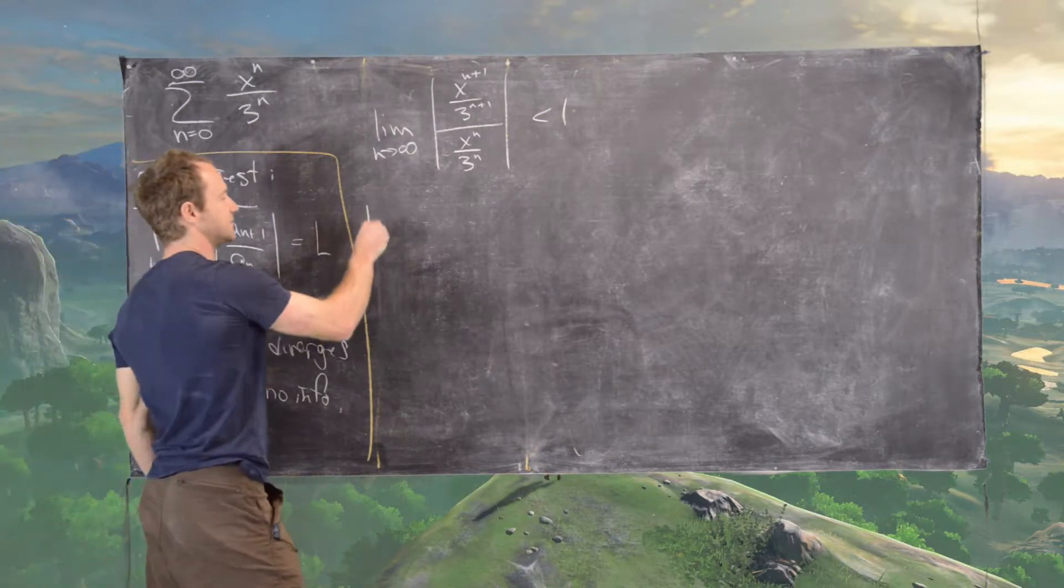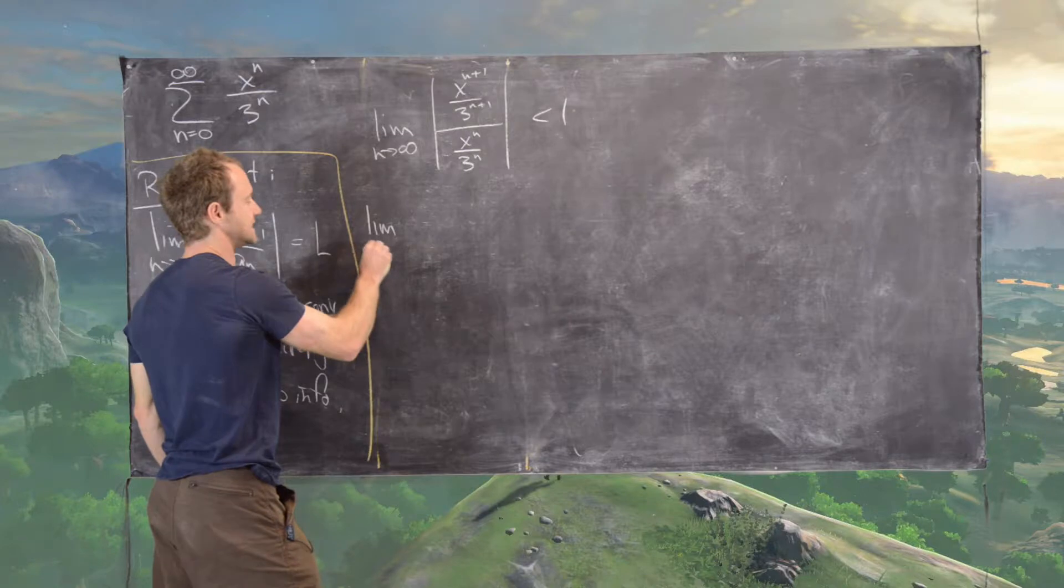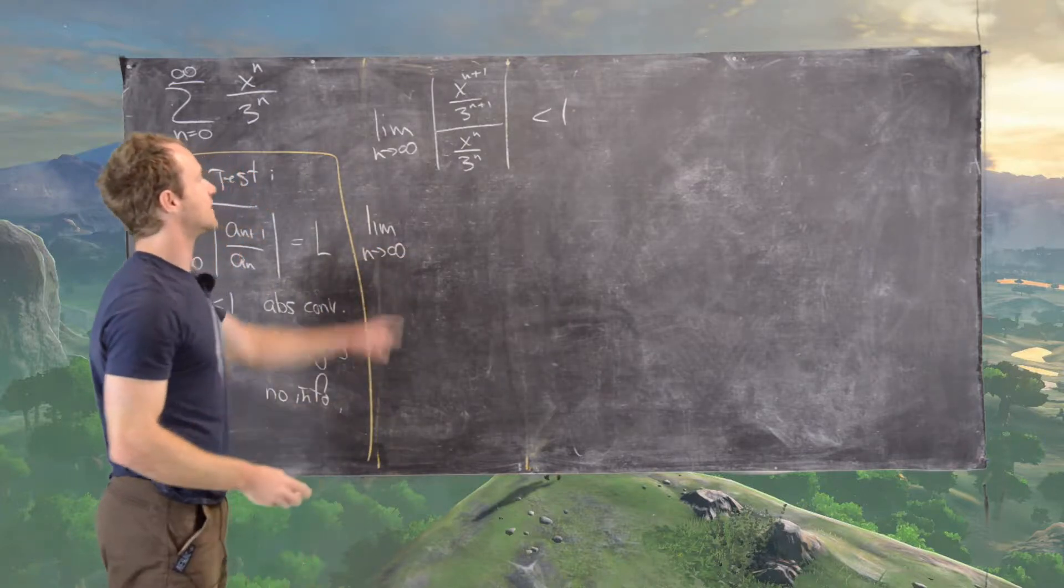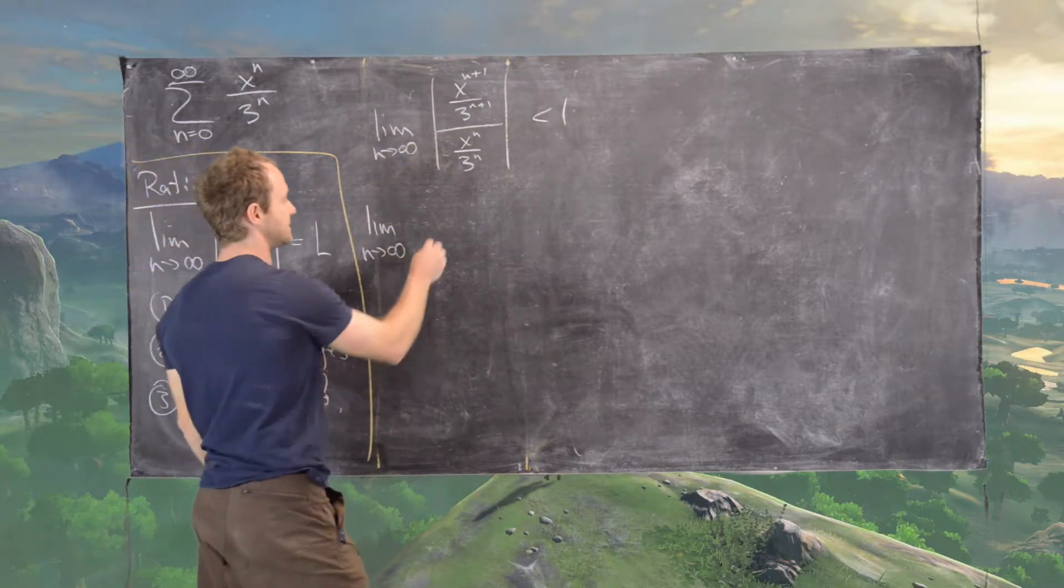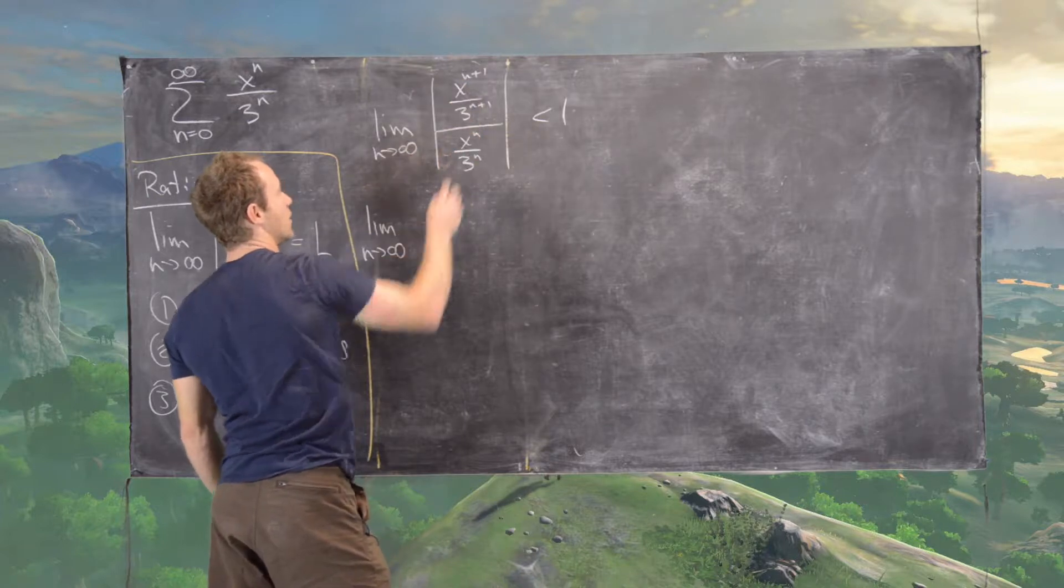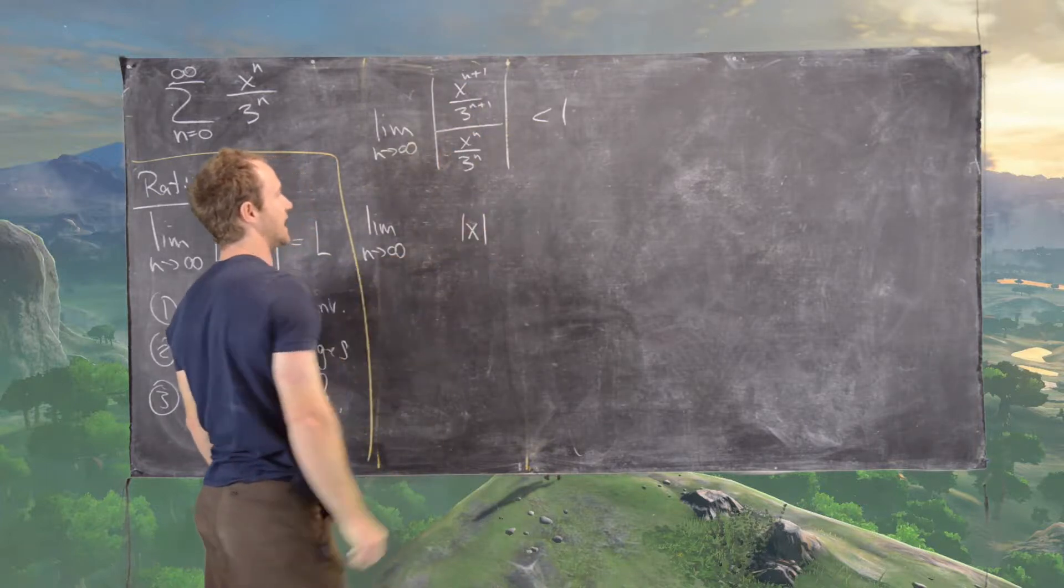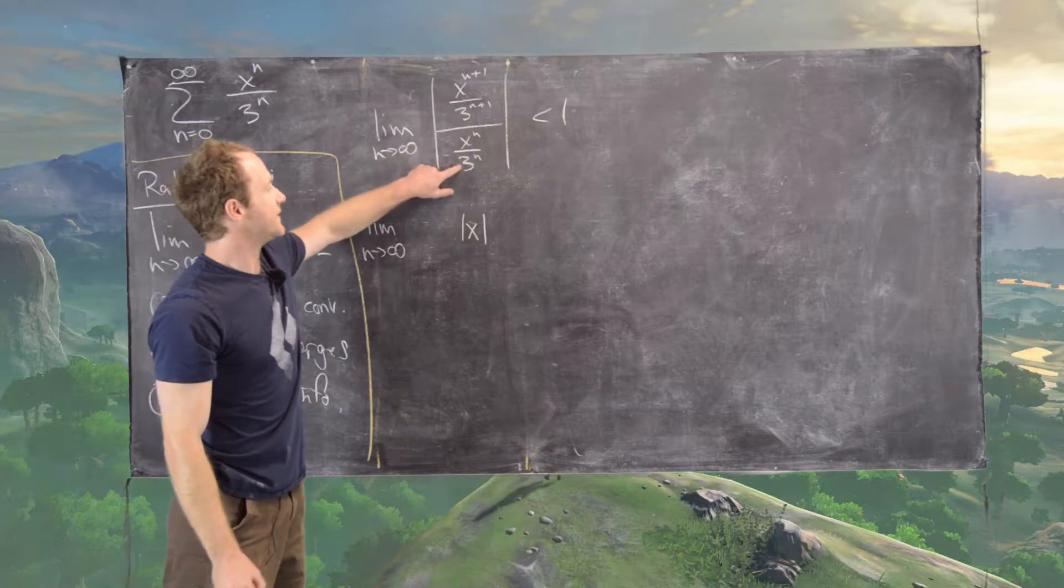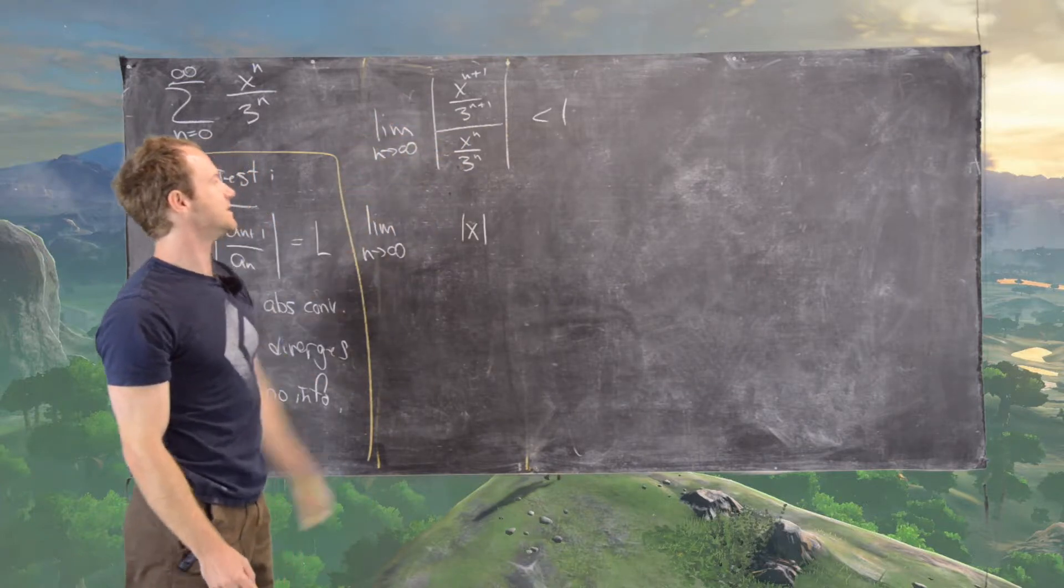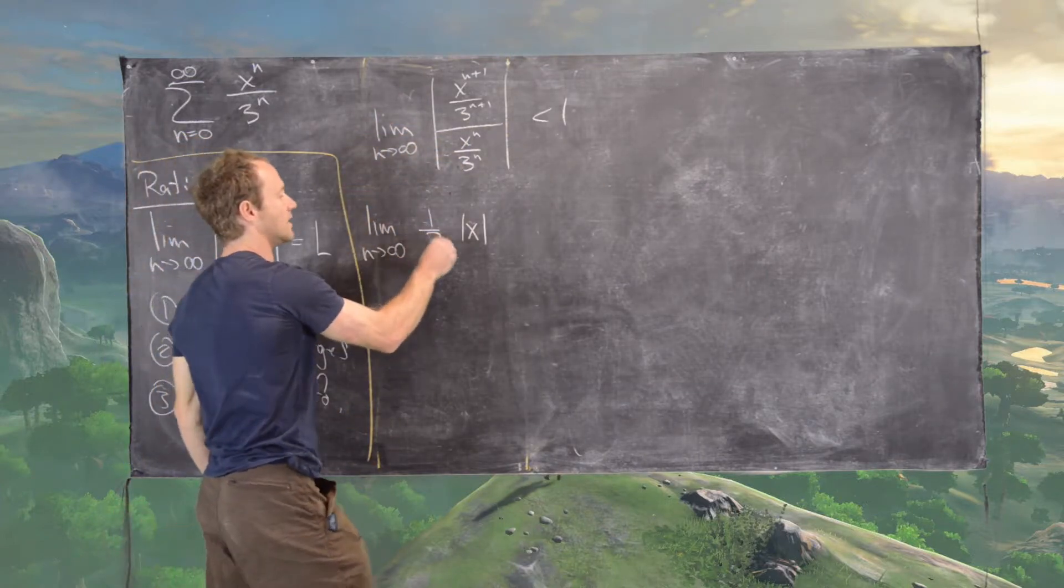Good, and now we can simplify that. So the limit as n goes to infinity. So now notice that is going to give us x to the n plus 1 over x to the n. So that will be the absolute value of x. And then if we flip this 3 to the n up to the numerator, that will give us 1 third.